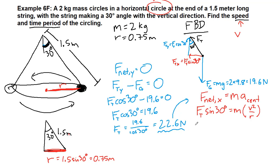We can plug in the numbers that we have. We have 22.6 times the sine of 30 degrees on the left. The mass is 2 kilograms, velocity is what we're looking for, and the radius is 0.75.